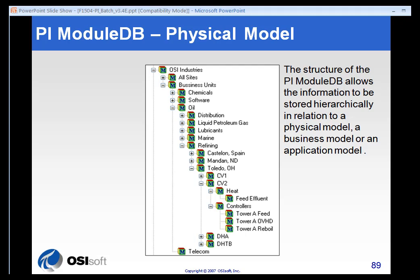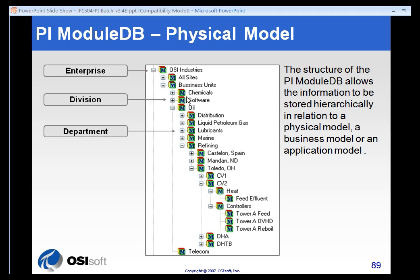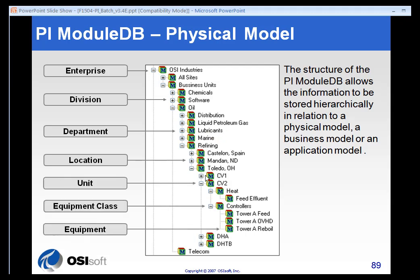When people build out their module databases, many elect to use the physical model. Here is an example: OSI Industries, a fictional entity. We start at the enterprise level and drill down to division, department, and location — a physical representation of the company. We drill down through business units and different departments, then finally locations, until we get to units and equipment. By the time we reach units and equipment, we're usually at something physical that has aliases, which are process variables, or has properties — and properties usually describe something about the physical unit.